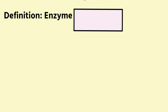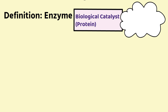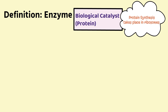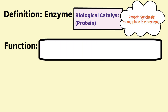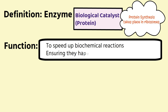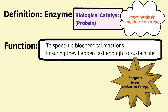Start at the very beginning: the definition of an enzyme. It's a biological catalyst — it's a protein catalyst, and proteins are made in ribosomes. The function of the enzyme is to speed up biochemical reactions, ensuring that they happen fast enough to sustain life. Enzymes achieve this by lowering the activation energy.